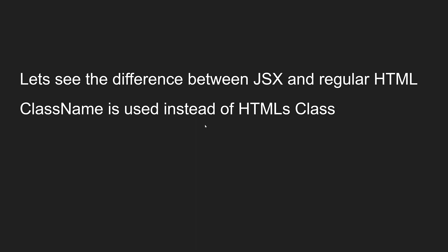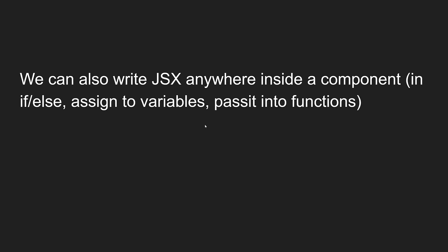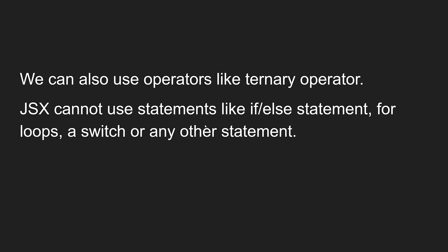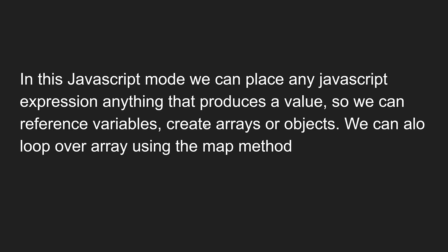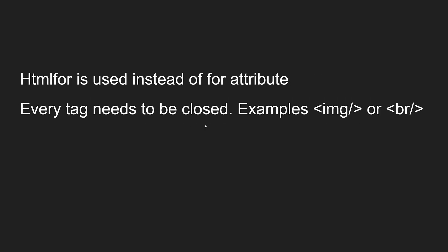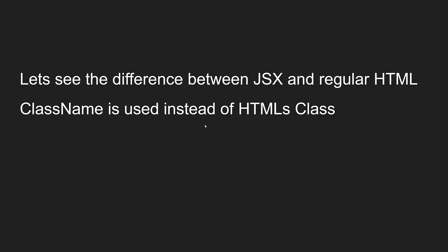To summarize the rules of JSX: it needs to have one root element, you can write JSX anywhere inside a component, HTML written in JSX gets converted into a React.createElement method call under the hood, you cannot use if/else statements, for loops, or switch statements, but you can use the ternary operator or loop over arrays using the map method.